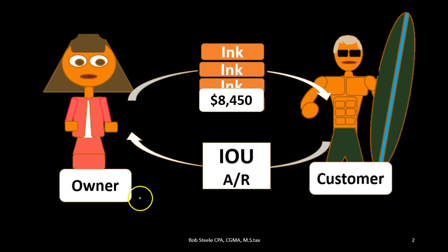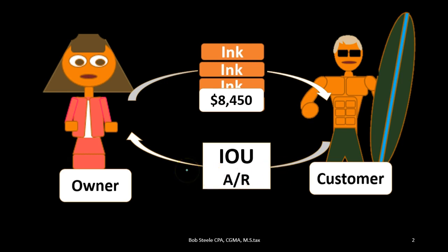We have the owner and the customer. We're selling inventory — this ink — for a cost of $8,450 to the customer. The customer is not paying cash but paying an IOU to the owner. Typically under a perpetual system we break this out into two components: one, the IOU or the accounts receivable or sales component, similar to what would be seen in a service company.